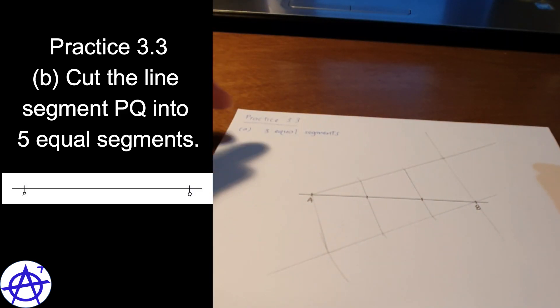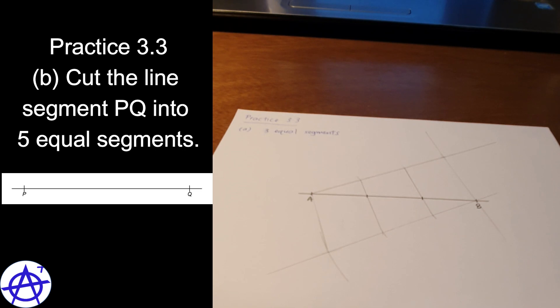So now for B, cut the line segment PQ into 5 equal segments. It's using the same concept. Now I give you a few minutes — you try.